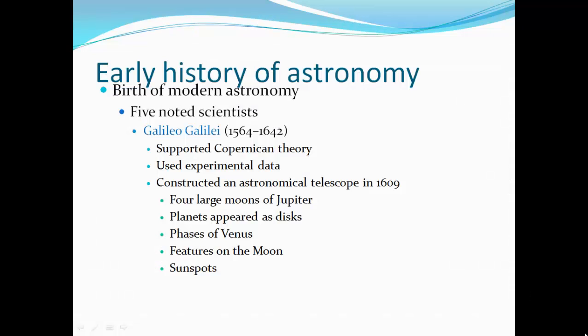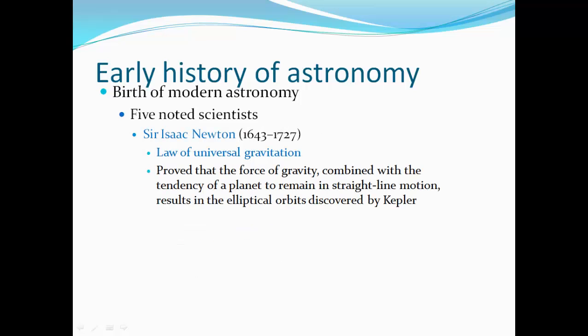Now Galileo Galilei, he lived 1564 through 1642. He supported Copernican theory. He used experimental data. And he constructed an astronomical telescope in 1609. He found four large moons of Jupiter. The planets look like disks. He noticed that Venus has phases, like the Moon has phases. He could see features on the Moon, and he found some spots on the Sun.